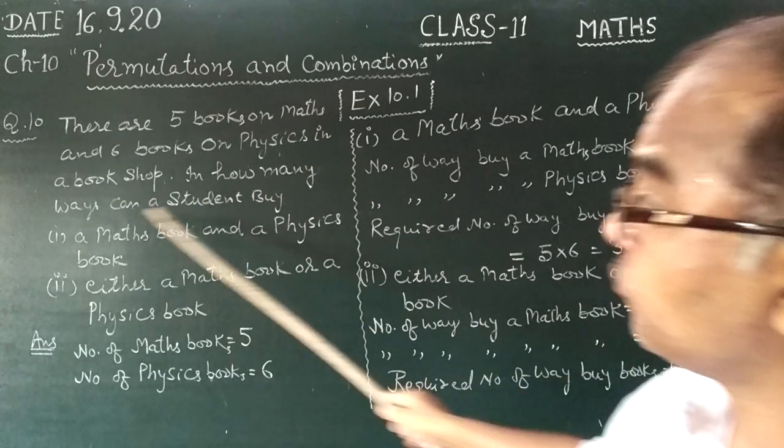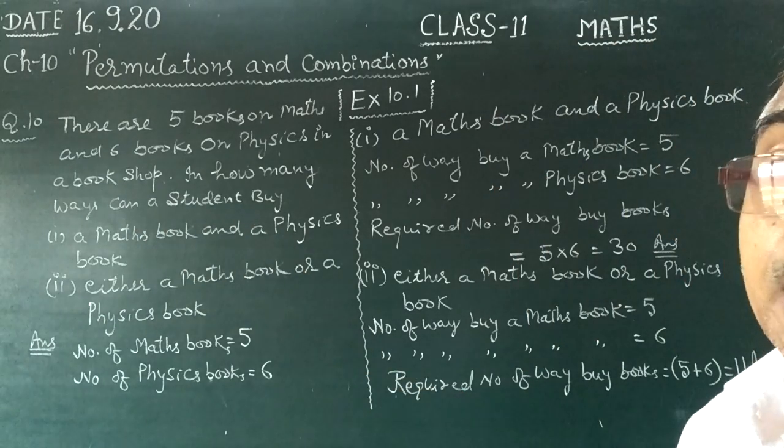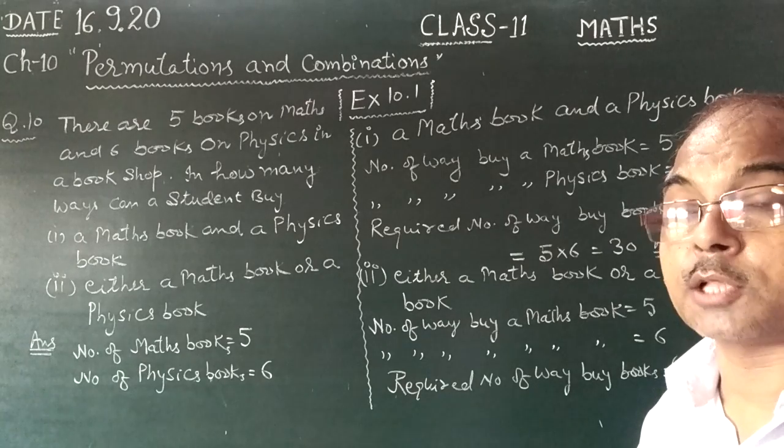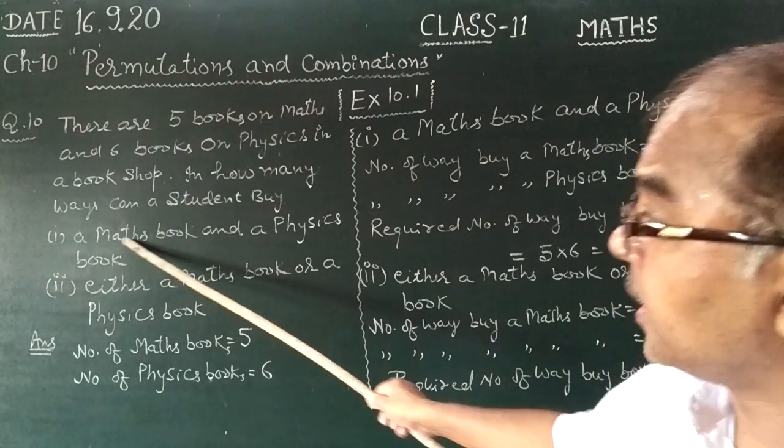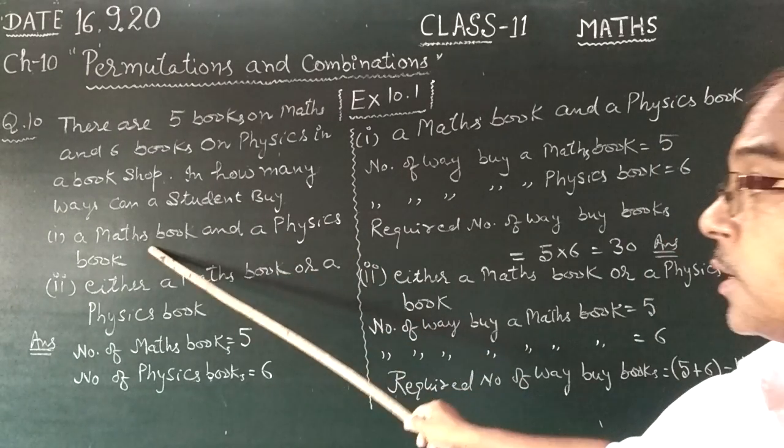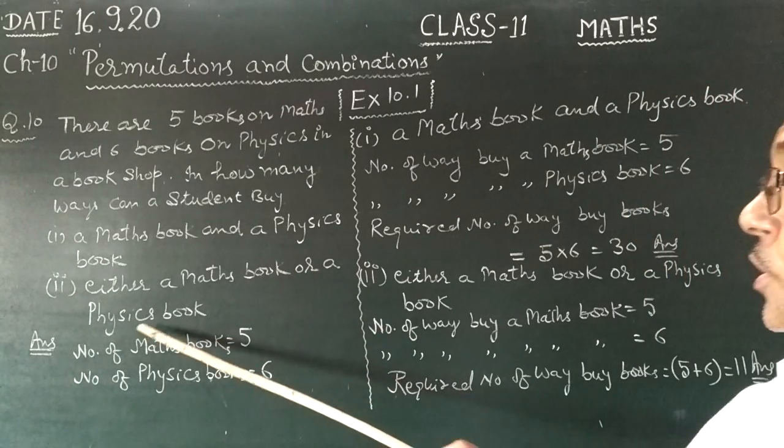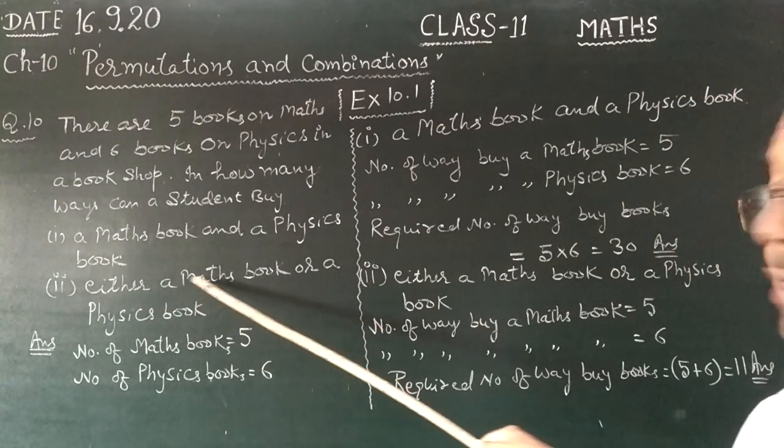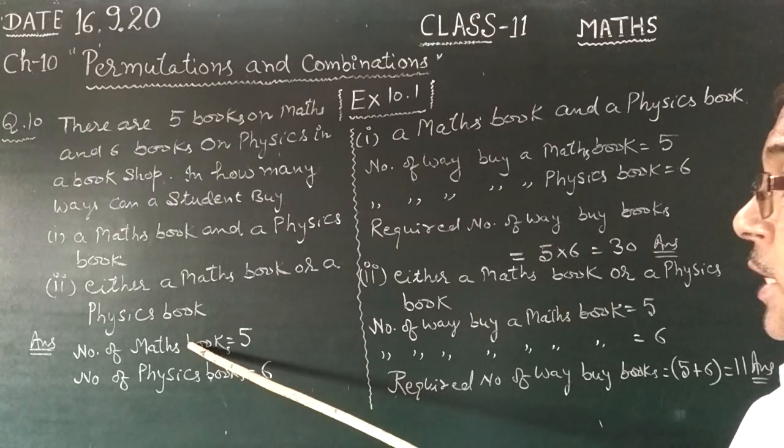In how many ways can a student buy 1 math and 1 physics? This is the first part. Either a math book or a physics book.